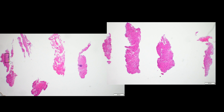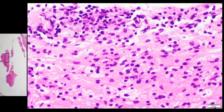Coming back to our biopsy core and looking at another location, we can again see small, round, uniform, monomorphic hyperchromatic cells — which are lymphocytes — so we've got a little more inflammation. There are also some cells that have this cleared-out cytoplasm with a pretty round nucleus — these are macrophages. Some general surgical pathologists might say that this appearance — a round nucleus with cleared-out cytoplasm — looks like oligodendroglial cells and the typical fried egg appearance.